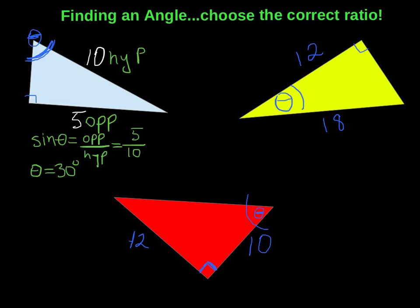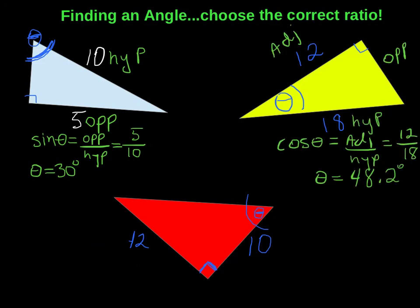Alright, so there's your first triangle. The yellow triangle, this angle theta right here worked out to be 48.2 degrees. And you can see that we used the adjacent and the hypotenuse side which forced us to use cos theta.